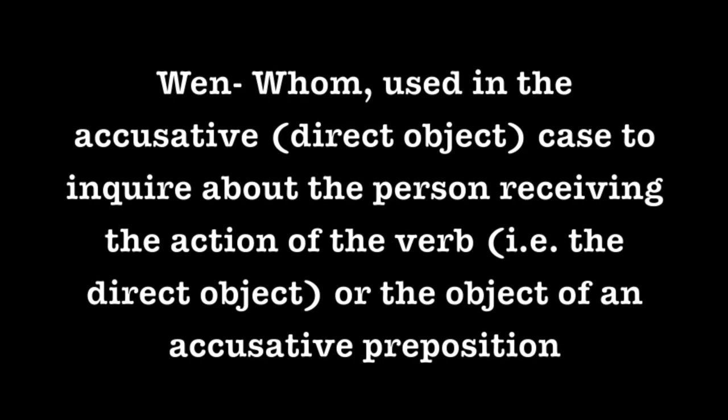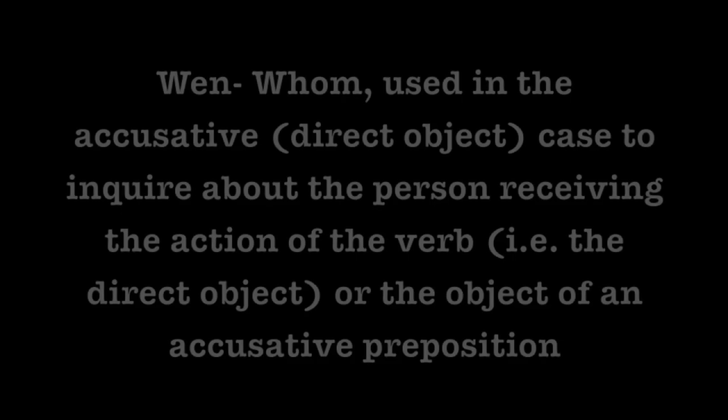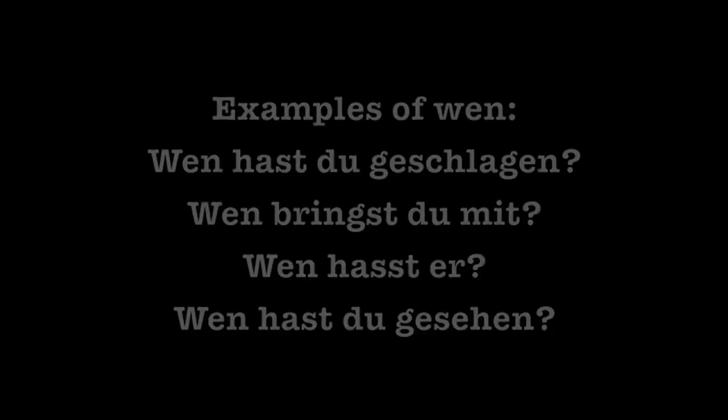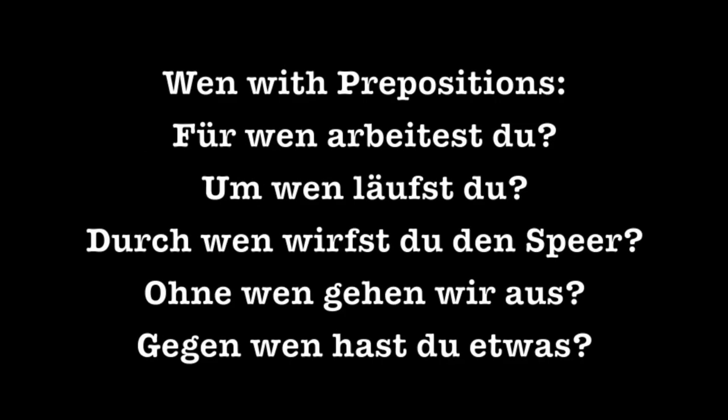Wen is the next one on our list. Wen means 'whom'. It's used in the accusative case — also known as the direct object case — to inquire about a person receiving the action of the verb, i.e. the direct object, or the object of an accusative preposition. Some examples: Wen hast du geschlagen (whom have you hit?), Wen bringst du mit (whom are you bringing along?), Wen hasst er (whom does he hate?), Wen hast du gesehen (whom have you seen?). There are five accusative prepositions, all of which you can use with Wen. Note that technically you should say 'for whom do you work?' in movies, but they usually say 'who do you work for?'